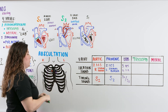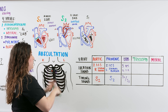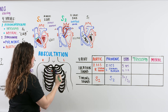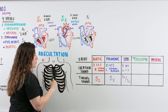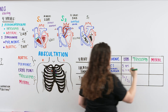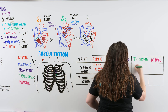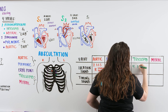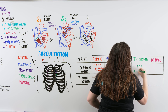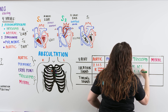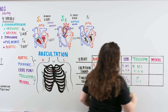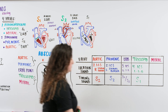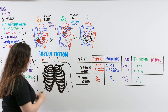Then move to the tricuspid, which is easy — move down one more space. We're at the fourth intercostal space of the left sternal border. You should be hearing S1 there.